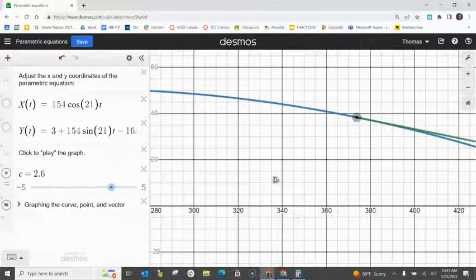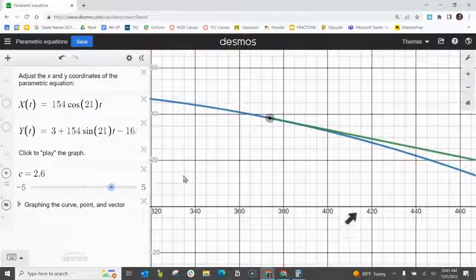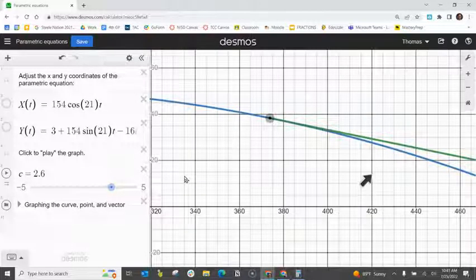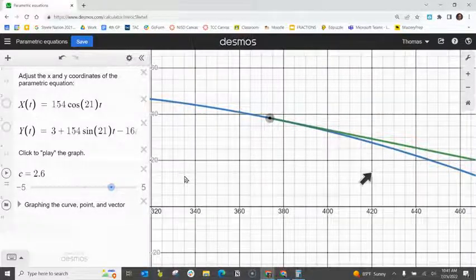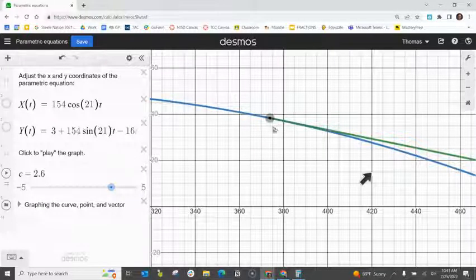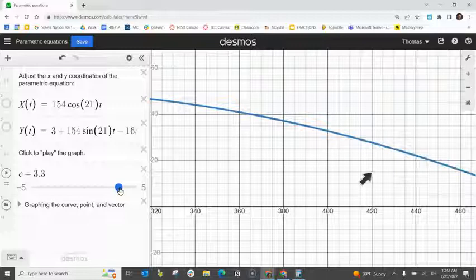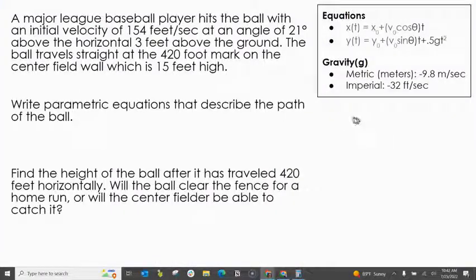And then at the 420 foot mark, which is where that center field fence is, here's a 15 foot high fence right here. Cause it looks like our y is going by five. So if we keep going, it looks like that baseball clearly clears the fence. And this is a home run.